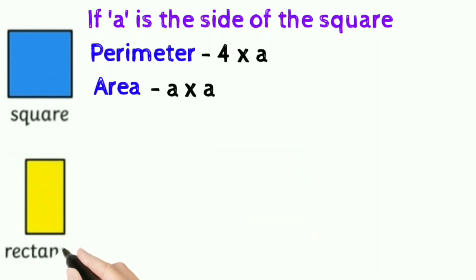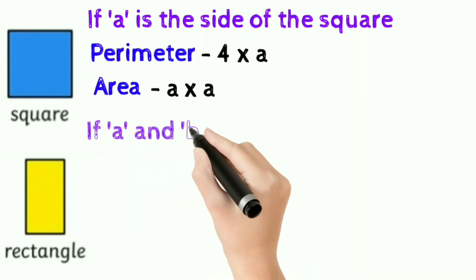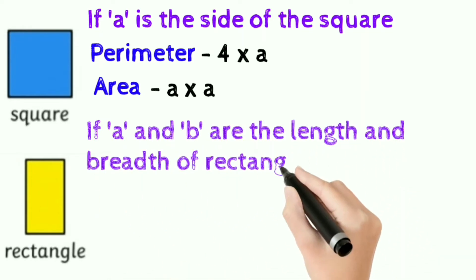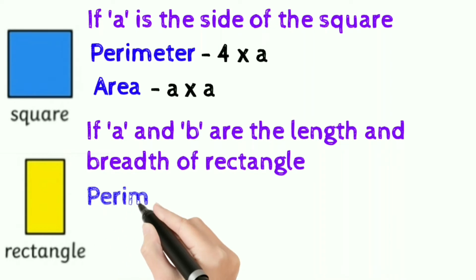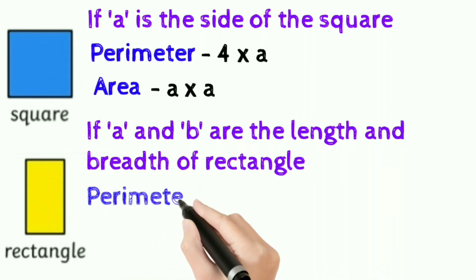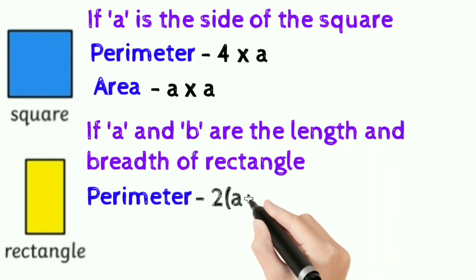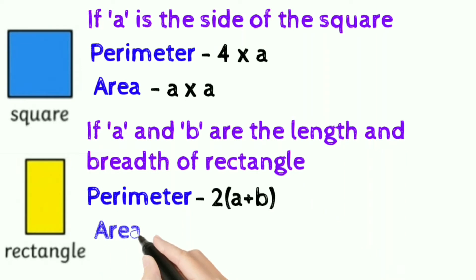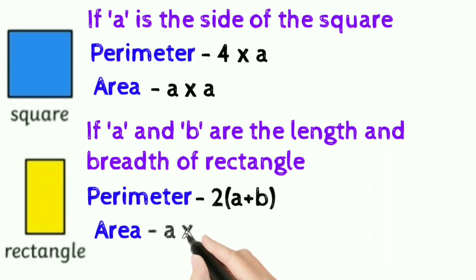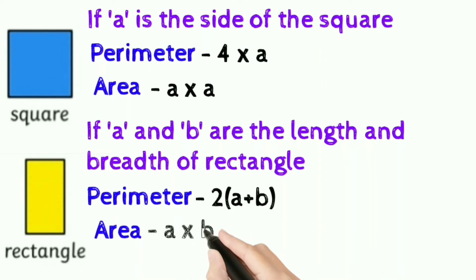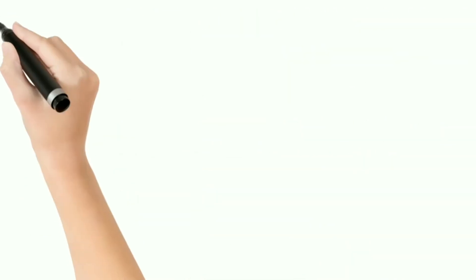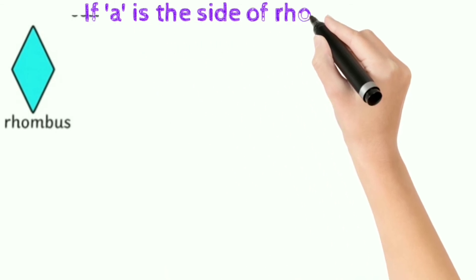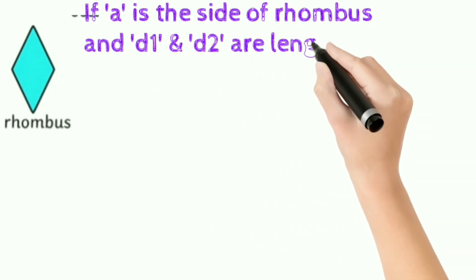Rectangle: if a and b are the length and breadth of the rectangle, perimeter of the rectangle is 2 into (a plus b), and area of the rectangle is a into b.